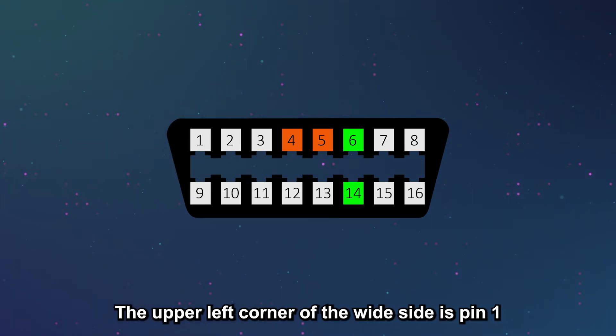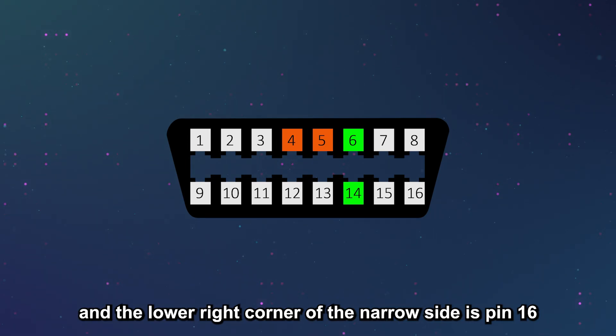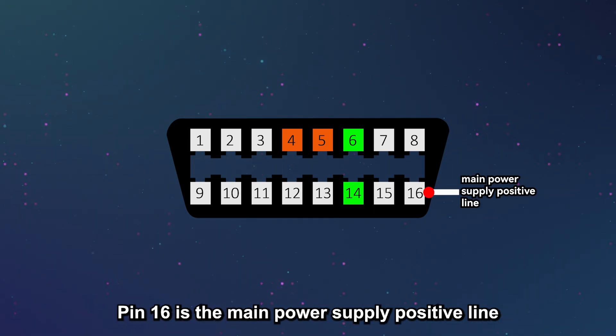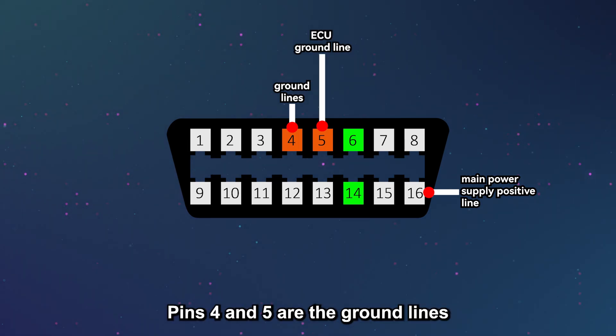The upper left corner of the wide side is pin 1, and the lower right corner of the narrow side is pin 16. Pin 16 is the main power supply positive line. Pins 4 and 5 are the ground line, including the ECU ground line.